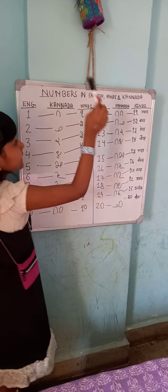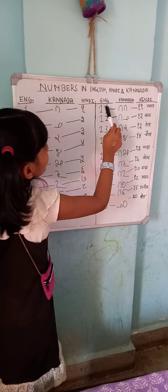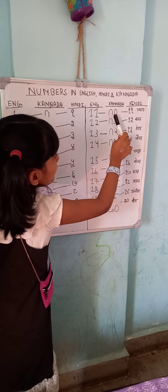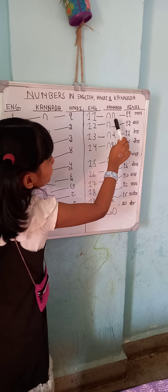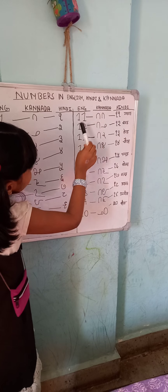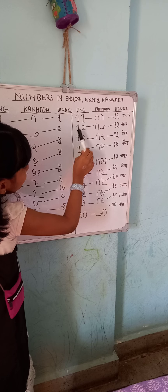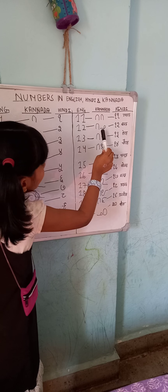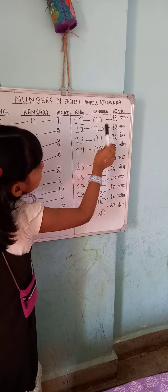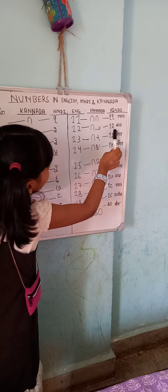Now let's count forward. In English: 11. In Kannada: Hannandhu. In Hindi: Gyarah. 12. In Kannada: Hanyaradhu. In Hindi: Barah.